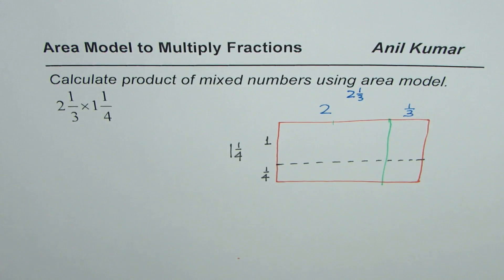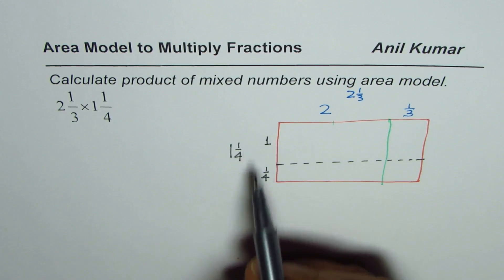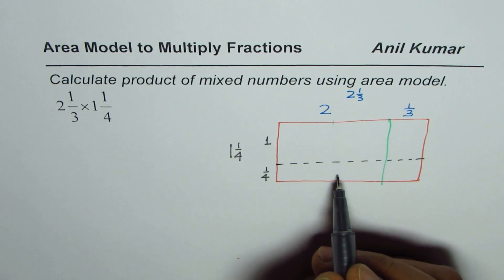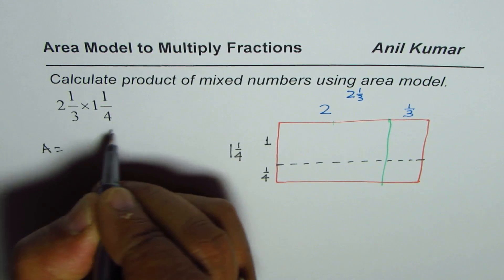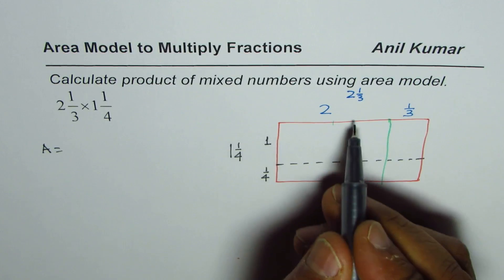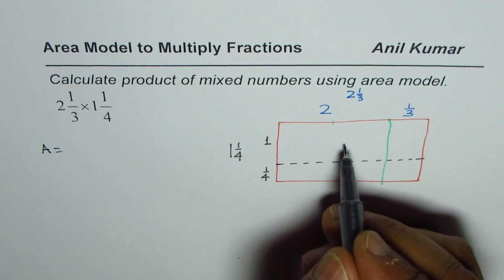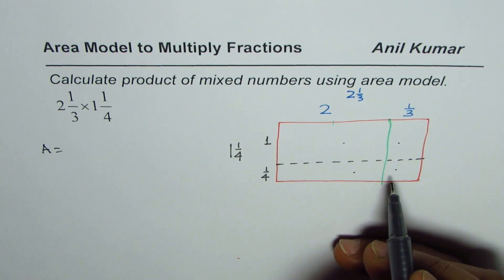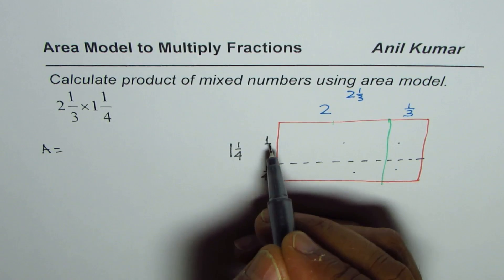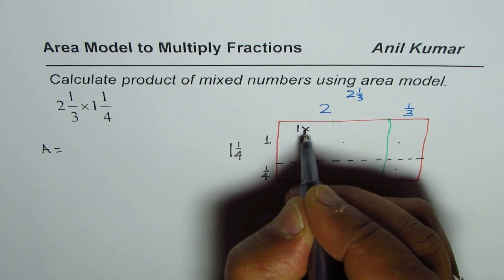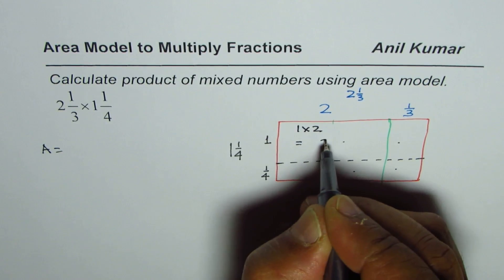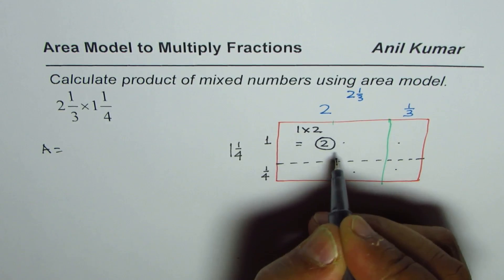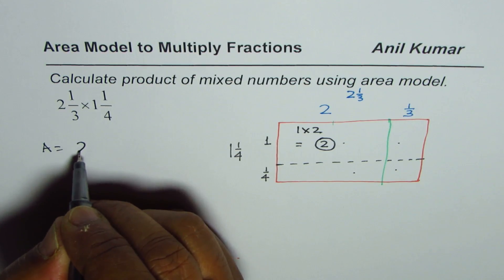We now have four rectangles within the big rectangle. The area of the whole is the sum of these four areas — that is, length times width equals the sum of these four areas. The first rectangle is 1 times 2, which gives us an area of 2.